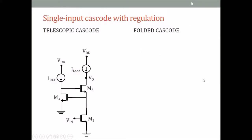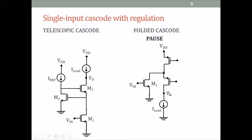We switch to a regulated folded cascode. Here is the folded cascode which we have seen before. This is the input common source stage. The output of the common source with an NMOS goes to the source of a PMOS. This PMOS is the common gate stage of the cascode. The output is taken here, and then the load is a current source. We also have a transistor to supply currents to both branches of the folded cascode configuration.